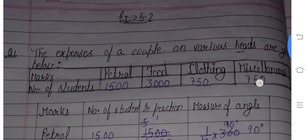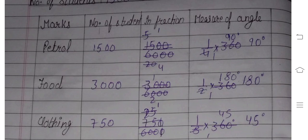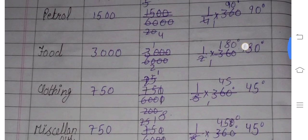You will create a table. We have first column marks and measure of angle. The marks are what we have: Petrol, Food, Clothing, and Miscellaneous.